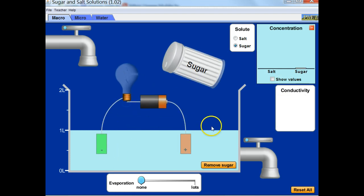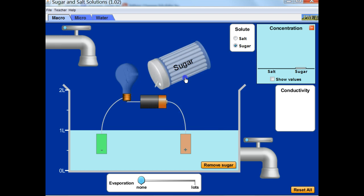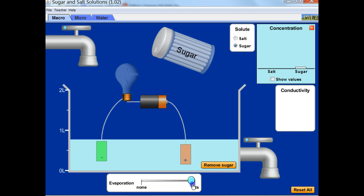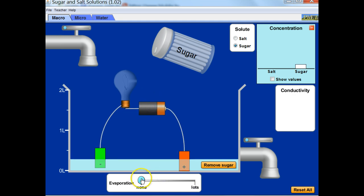Let's try to evaporate that water down, and it's not going to happen. So sugar water is not an electrolyte; it will not conduct electricity.